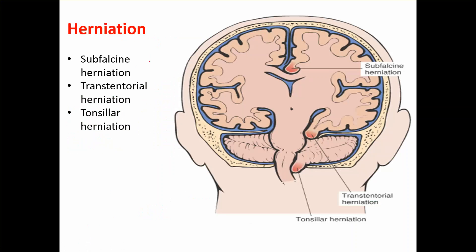There are three types of herniation: subfalcine herniation, transtentorial herniation, and tonsillar herniation. This is a coronal section of the brain — it is important to identify which section you are looking at. In the center, the dural fold is the falx cerebri. Subfalcine herniation means it is just below the falx cerebri — you can see the herniation here.